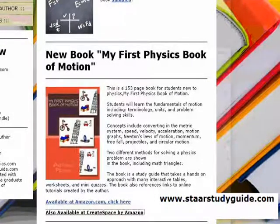So this tutorial is part of my book called My First Physics Book of Motion. It's a 153 page book that's designed for students new to physics from high school to collegiate level. It makes sure that you learn the fundamentals of motion including terminology, units, and problem solving skills. It shows two different methods for solving problems. The study guide takes a hands-on approach with many interactive tables, worksheets and quizzes.